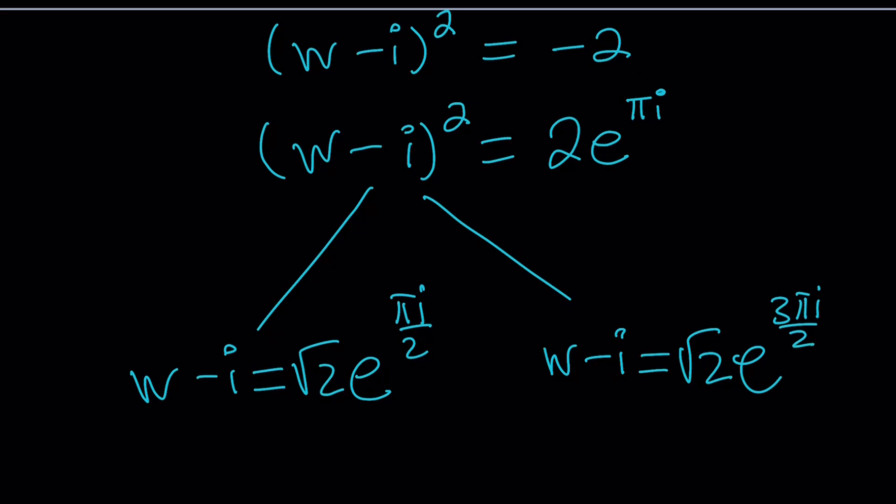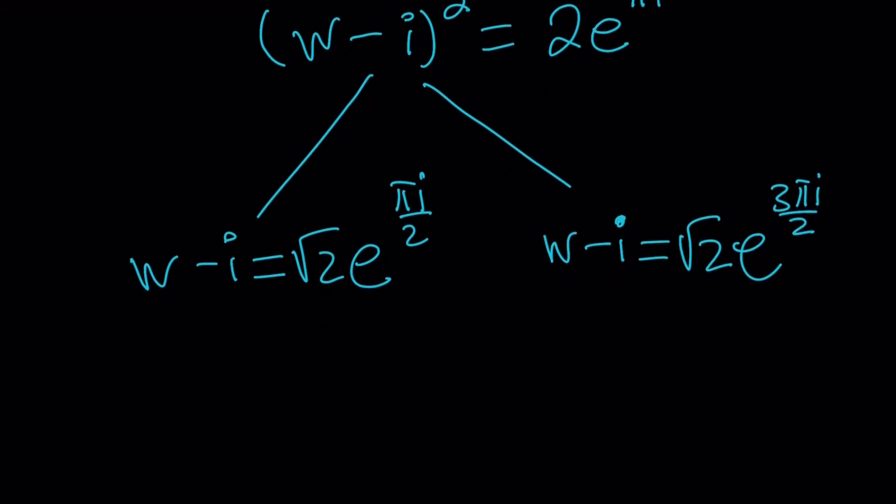You could also just negate this, because that's what the square roots are. They're opposites. In the real world and complex world too. But complex world is different. In the real world, we only have a one positive principal square root. Okay, so those are going to be the values of w minus i, but we're supposed to find w.